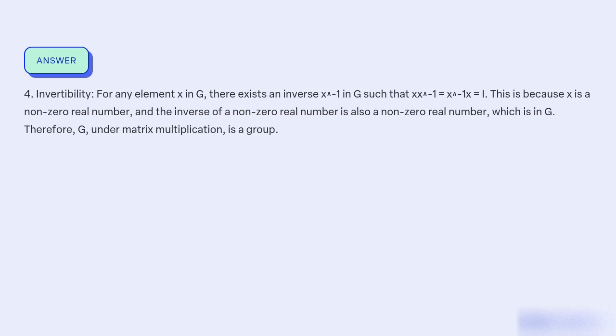Four, invertibility. For any element X in G, there exists an inverse X^(-1) in G such that X times X^(-1) equals X^(-1) times X equals I. This is because X is a non-zero real number, and the inverse of a non-zero real number is also a non-zero real number, which is in G. Therefore, G under matrix multiplication is a group.